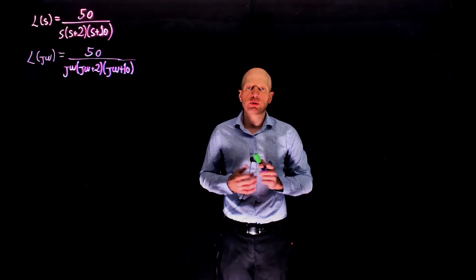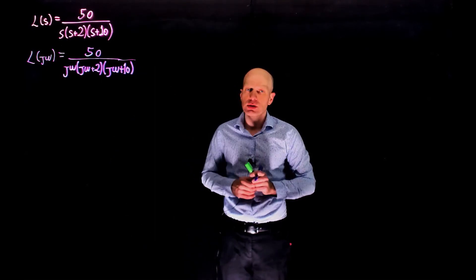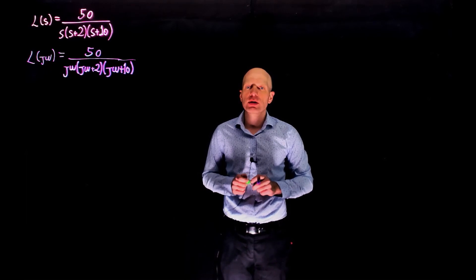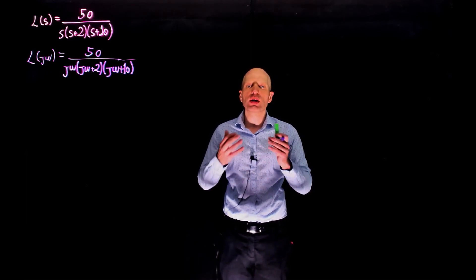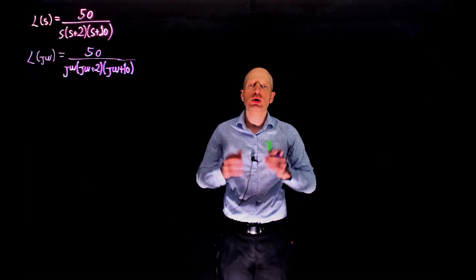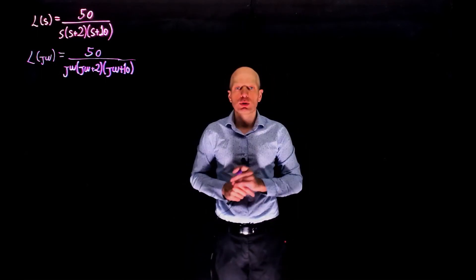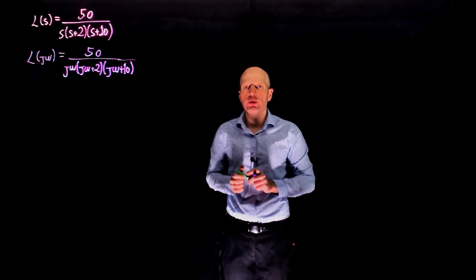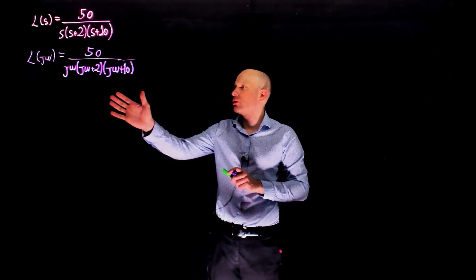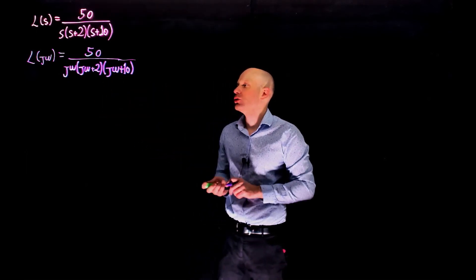The first step is to find the crossover frequency of L of s. The crossover frequency is defined as the frequency for which the gain is 0 decibels, or the magnitude of the transfer function is 1. To find the crossover frequency, it is sufficient to find the magnitude of this transfer function and equate that to 1.